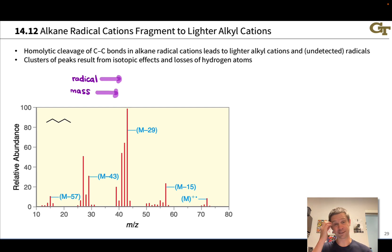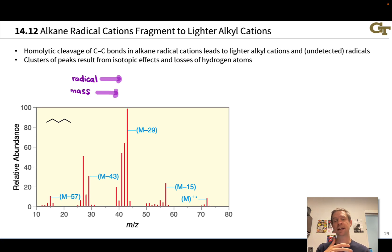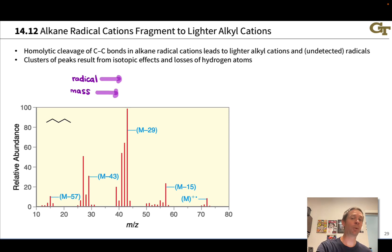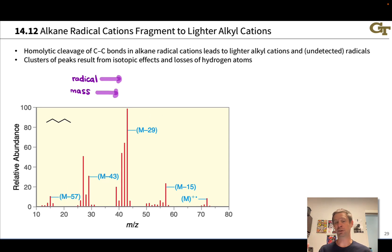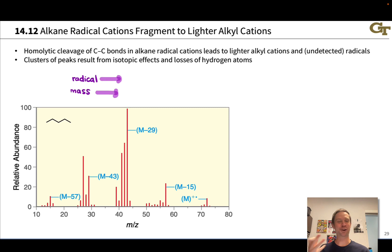Ionization of an alkane gives rise to simply an alkyl radical cation, and cleavage of C–C bonds in alkane radical cations can produce lighter radicals and alkyl cations. The radicals go undetected because they have no charge — only the charged cations are detected. However, we can infer that the radicals were given off in the fragmentation process by looking for gaps between peaks. For example, gaps of minus 15, minus 29, minus 43, minus 57 indicate the loss of a radical with that molar mass, and these numbers recur quite commonly in mass spectra of organic compounds.